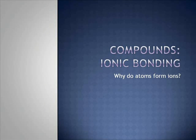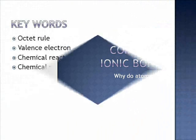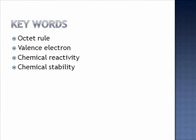Compounds. Ionic bonding. Why do atoms form ions? Key terms for this question include octet rule, valence electrons, chemical stability, and chemical reactivity. In order to answer the question, these words will need to be used and defined.